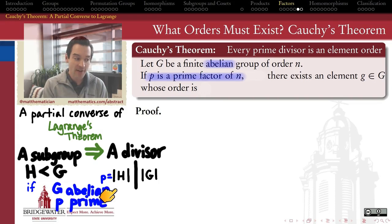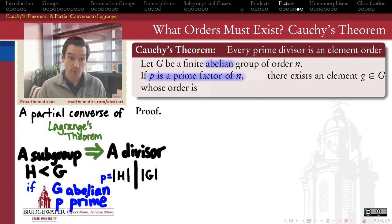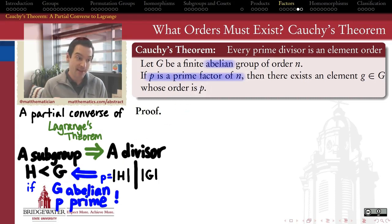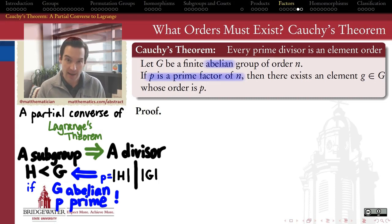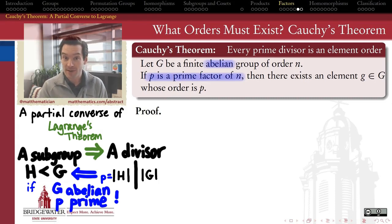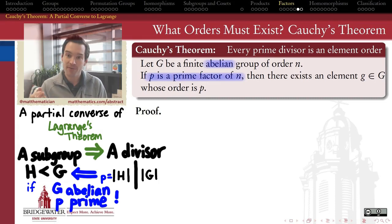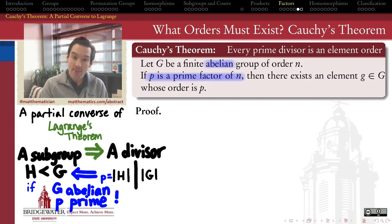The second assumption is that the divisor we're looking at is a prime divisor. So Cauchy's theorem says: if G is a finite abelian group of order N, and if P is a prime divisor of N, then there exists not just a subgroup of order P, but in fact an element whose order is P. These two things go hand-in-hand — every group of prime order is cyclic, so we get a generator whose order equals the order of that subgroup. Cauchy's theorem guarantees this partial converse: every prime divisor of the order of a finite abelian group has an element of that prime order.